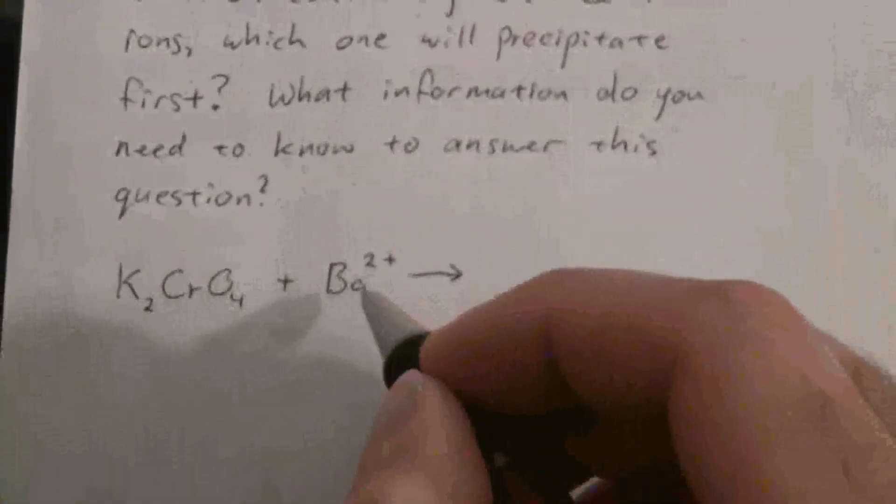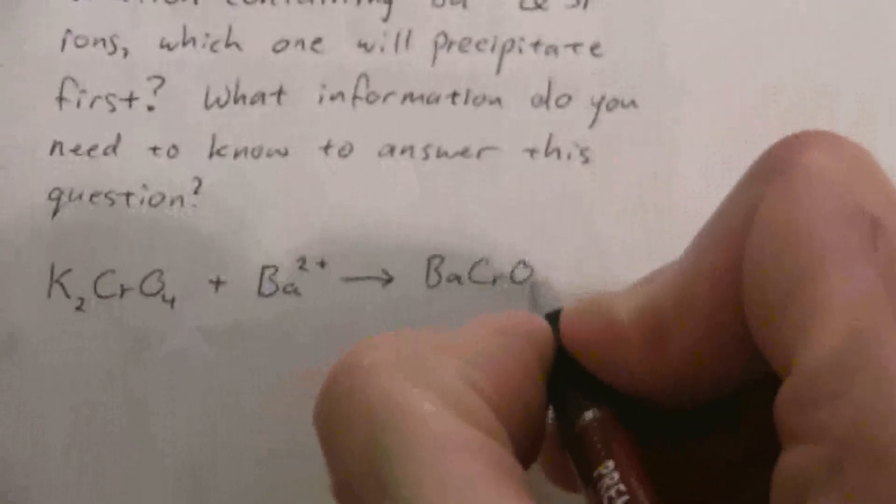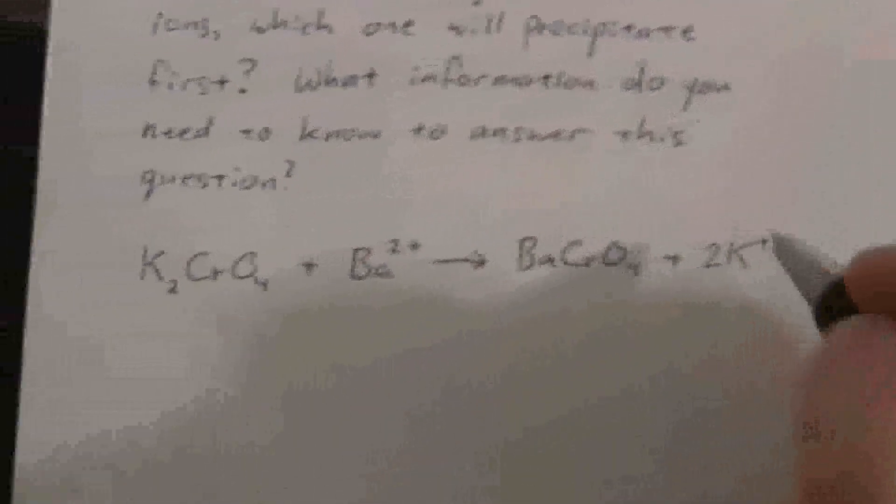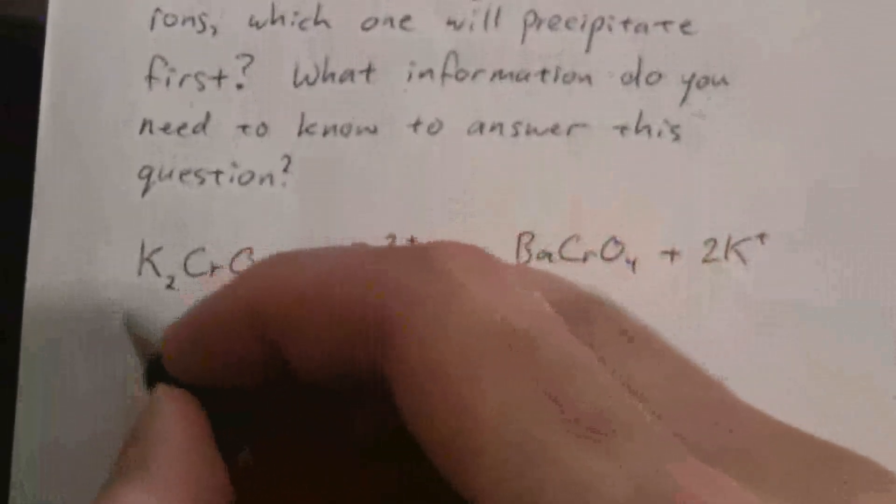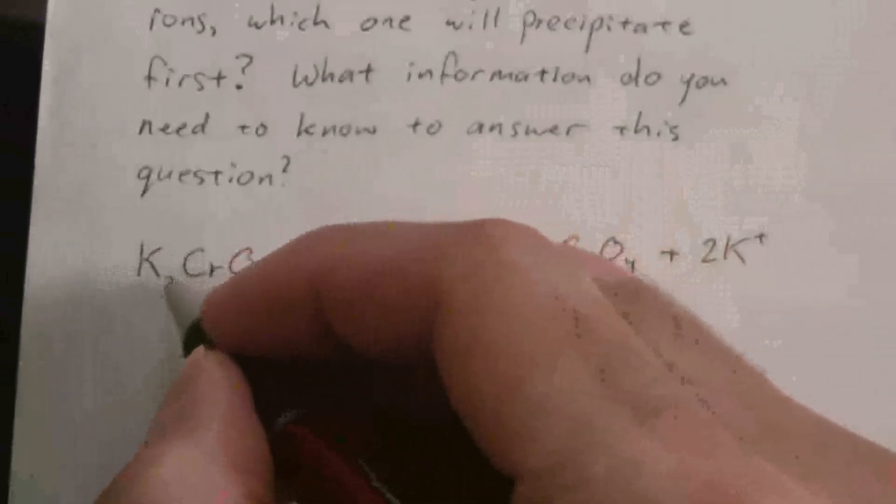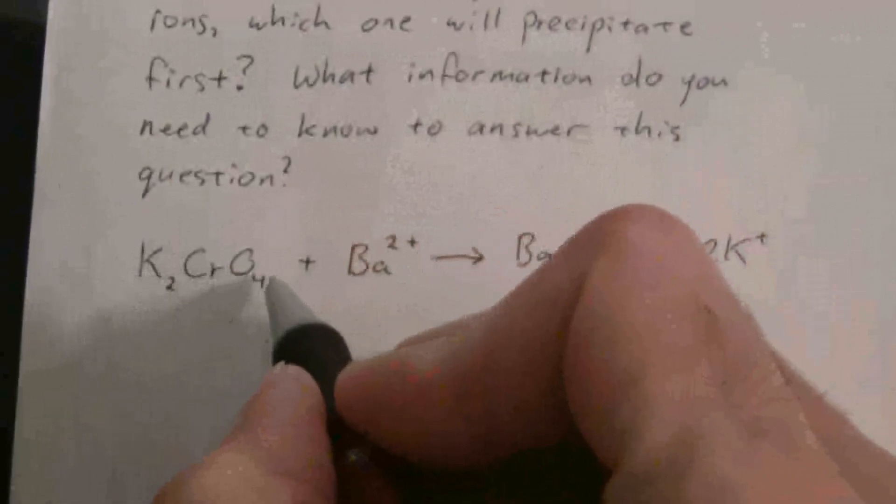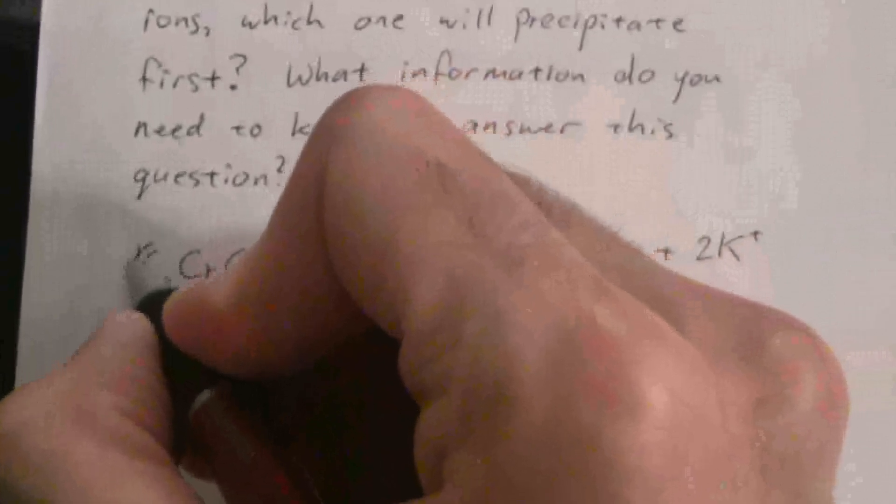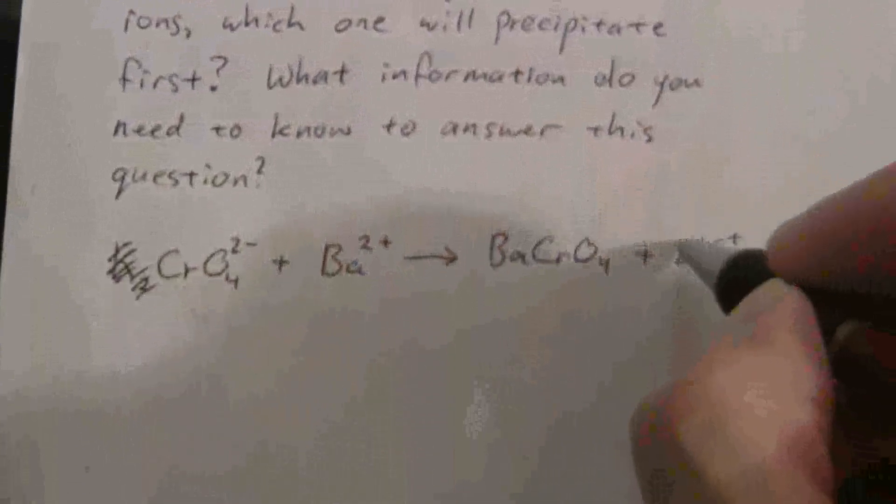We'll see that because what's going to happen here when this reacts is we'll get the barium chromate and the two potassium ions. Now this is a soluble salt, so if we wrote the net ionic equation we would write it just like this: 2K⁺ plus CrO₄²⁻. So in effect this drops out, and that's what we end up with.